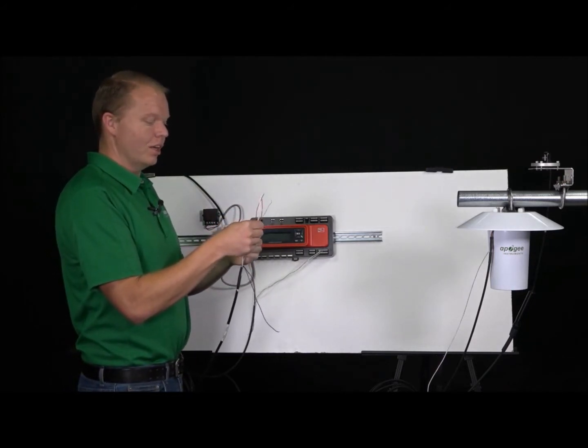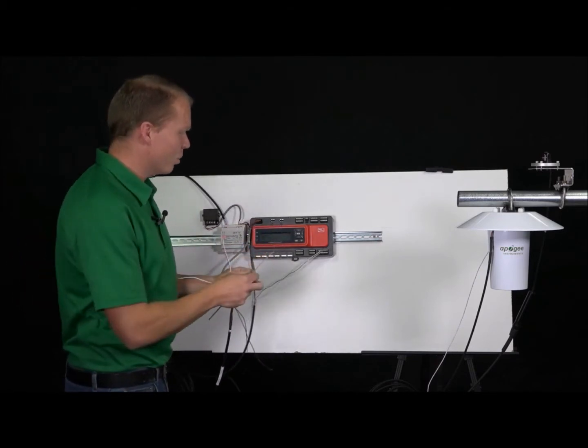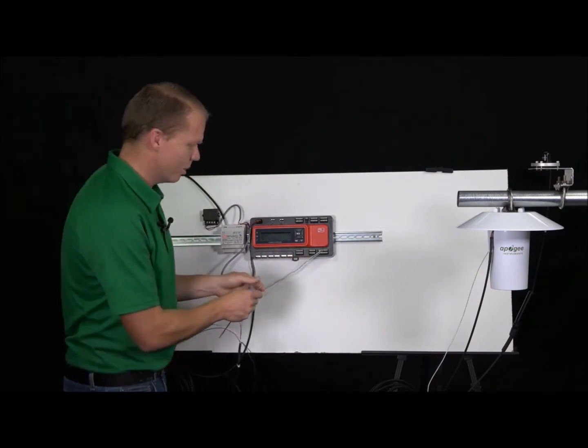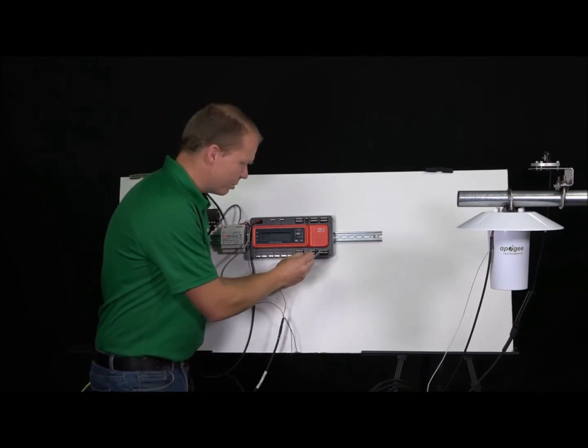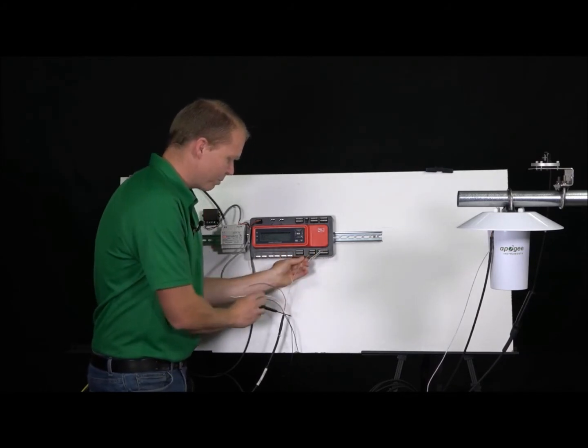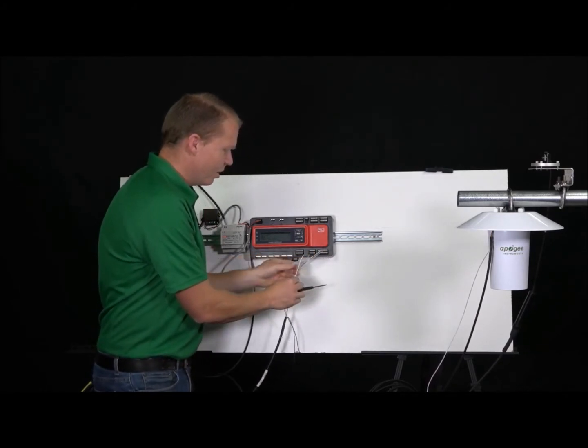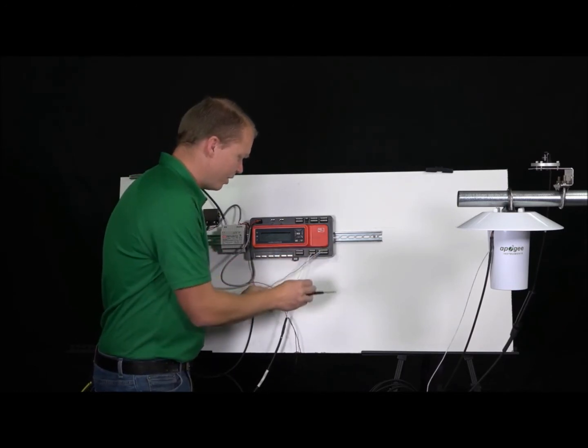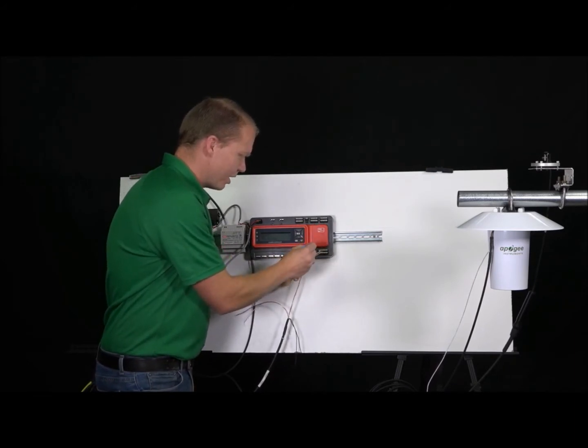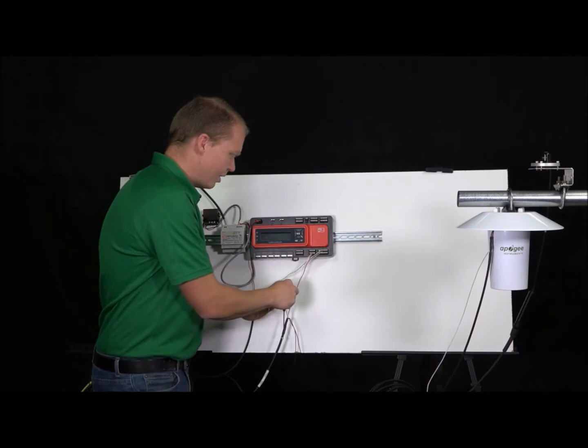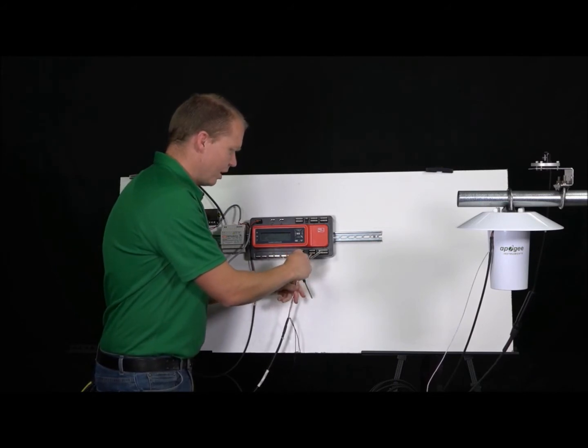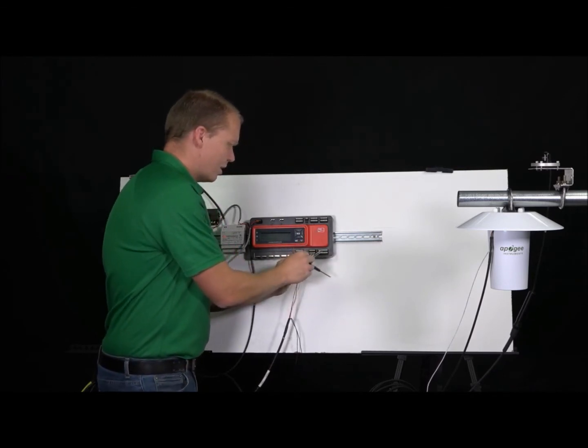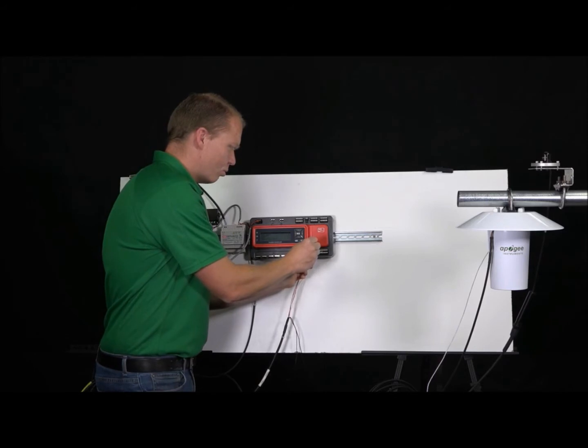We'll start with the shield and we're going to be working on terminal X7 down here and we're going to start on row B which is the bottom one. The first terminal here is going to be the shield and then the next one is going to be the white conductor. It actually doesn't matter which white conductor, you can choose either. Then the next one is going to be a red conductor and again it doesn't matter, you can choose either. Then we can choose the other white conductor that goes in the fourth one and then the last one is the other red.